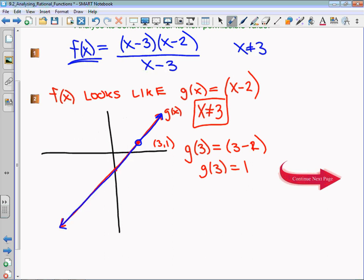What that means is that f(x) looks the same except we would have to put an open dot around that (3,1). In the equation of f(x), if I put three in: f(3) = (3-3)(3-2)/(3-3).